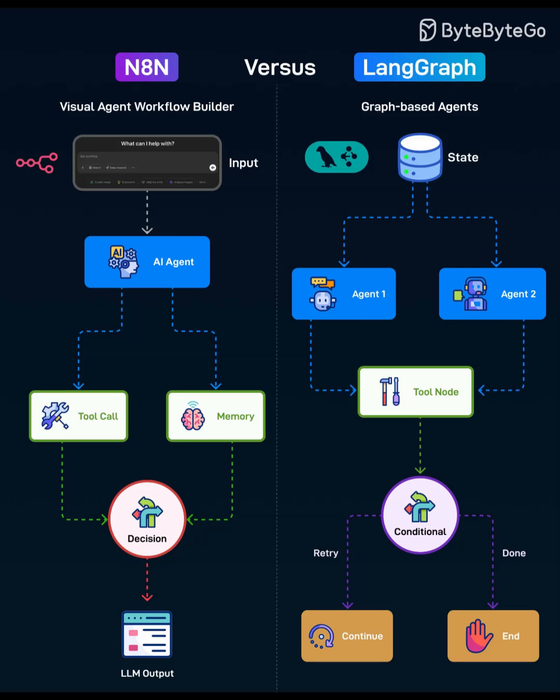Extensibility: N8N offers hundreds of pre-built connectors. LangGraph offers low-level hooks for custom tools, memory stores, and control strategies. Team fit: N8N favors ops and automation teams. LangGraph favors developers building agentic apps with deterministic flows.